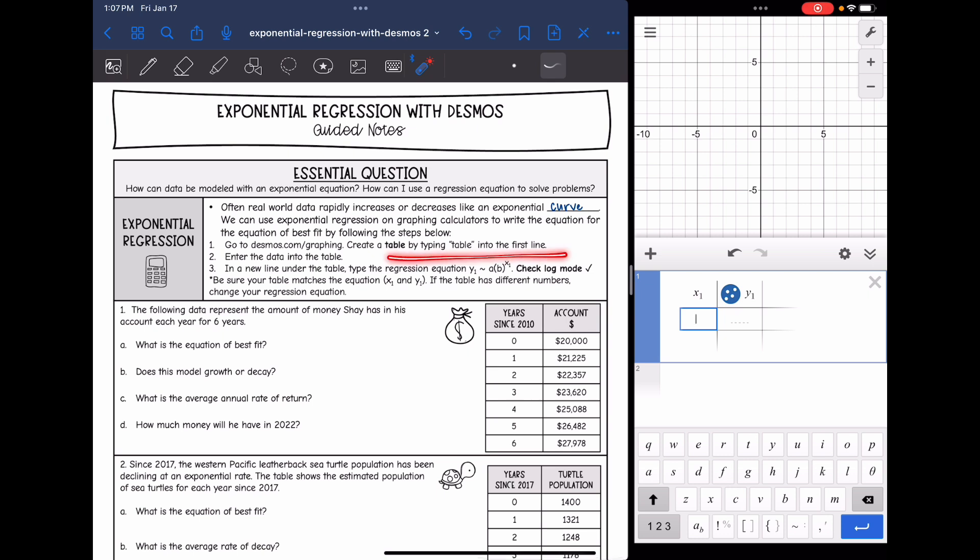So type table into the first line and then we'll enter our data into the table. And then in a new line under the table, we will type in the regression equation. Y1 is about A times B to the X1. And we're going to make sure that we check log mode so our equation is correct.